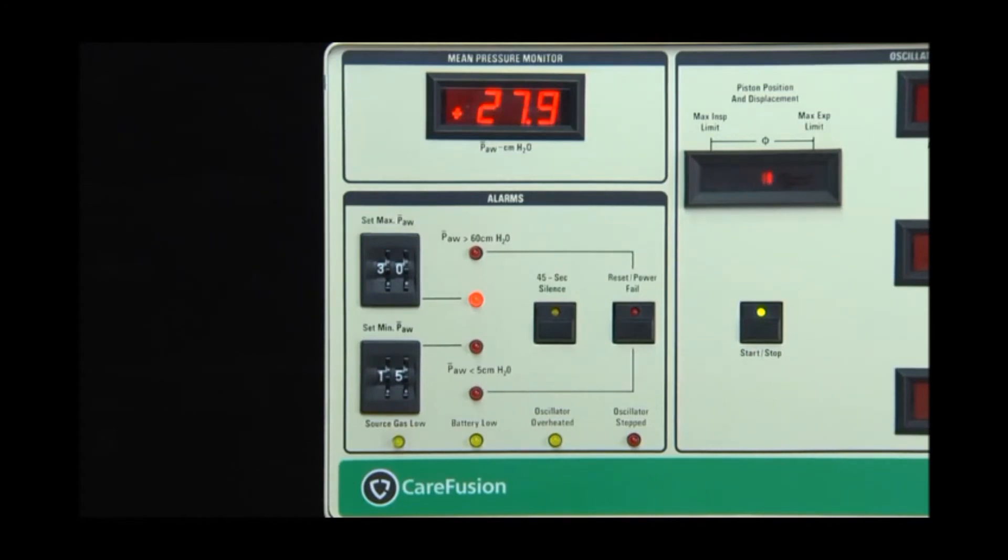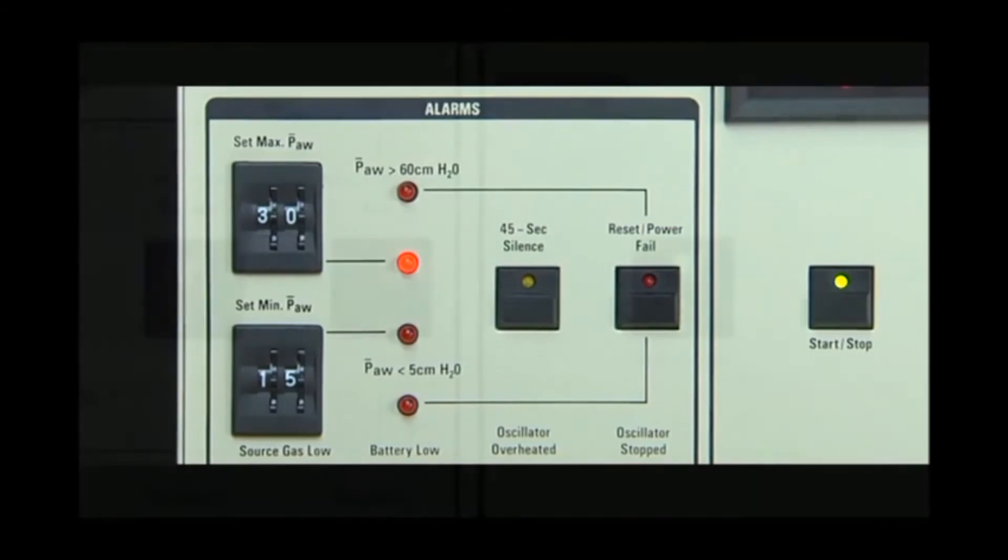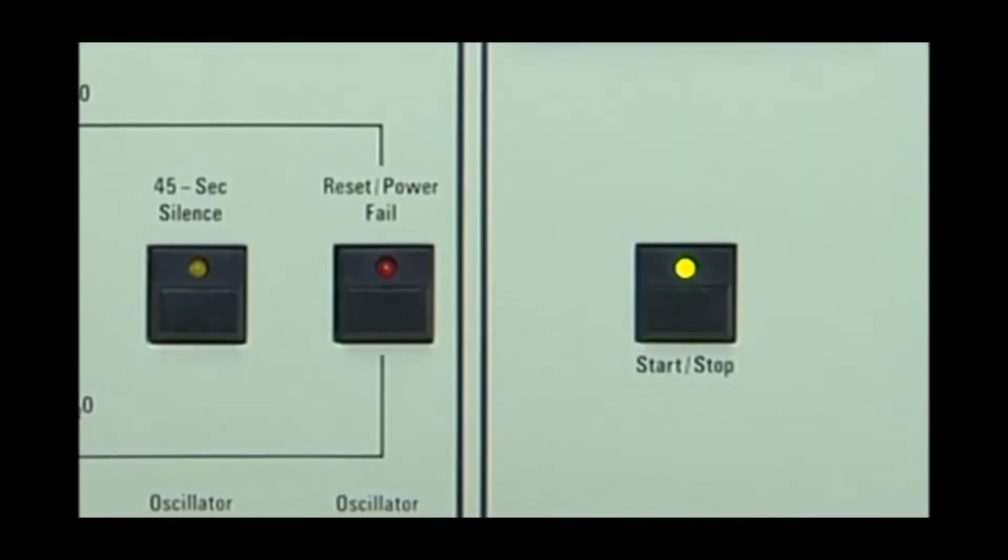At this time, the valve will re-pressurize to its operational state. However, the visual alarm will remain on. In the event that the high mean airway pressure alarm condition persists, the limit valve will continue to cycle until the fault condition is resolved. Pressing the reset power fail button will reset the visual alarm.